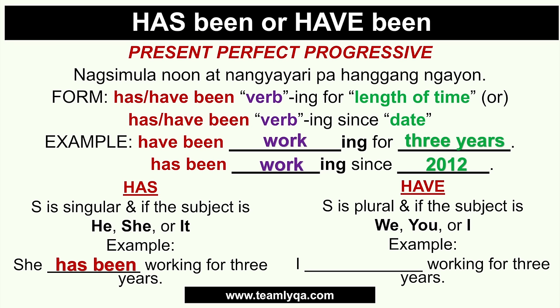So for example: if the subject is I, since I takes a plural count, you would say: I have been working for three years. Contrast that with: she has been working for three years. Both are the same tense — present perfect progressive — the only difference is the subject: one is she, the other is I.